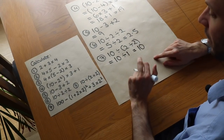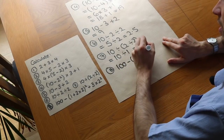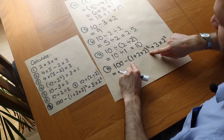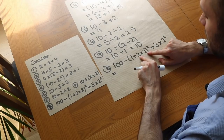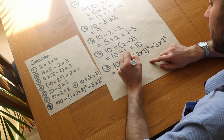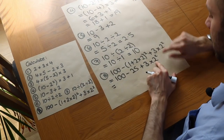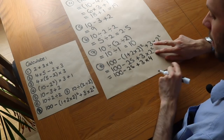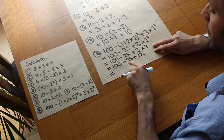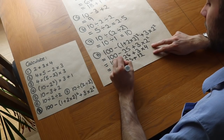Finally, the harder one: 100 minus (1 plus 2 times 2) squared plus 3 times 2 squared. We work out the bracket first. Inside the bracket, multiplication comes before addition, so 2 times 2 is 4, and 1 plus 4 is 5. So we have 5 squared, which is 25. That gives us 100 minus 25 plus 3 times 2 squared. The power comes next: 2 squared is 4. Then multiplication: 3 times 4 is 12. Now we have 100 minus 25 plus 12. Left to right: 100 minus 25 is 75, and 75 plus 12 is 87. The final answer is 87.